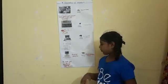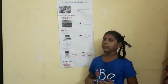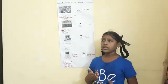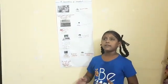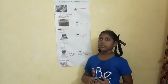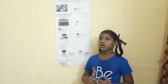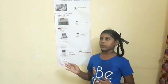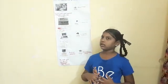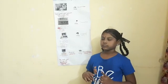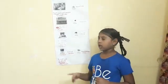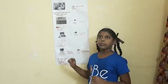4th generation of computers. The 4th generation computers time period is 1971 to present. The part used in 4th generation computers is microprocessor chips. A microprocessor is a complete CPU which is contained on a single chip. CPU means central processing unit. These computers are also called personal computers.